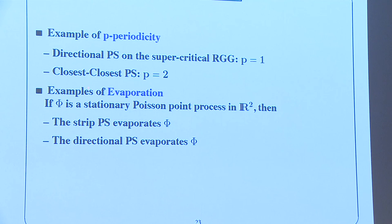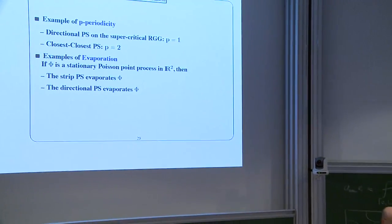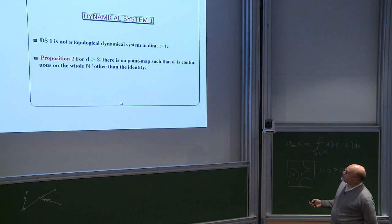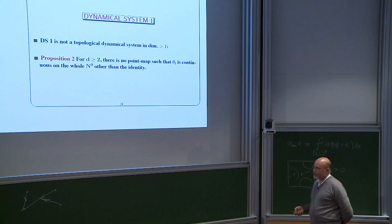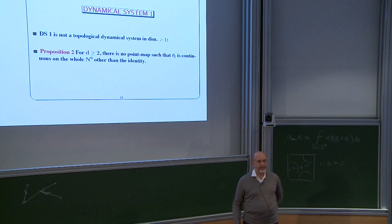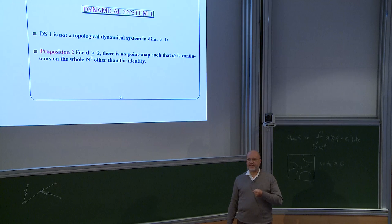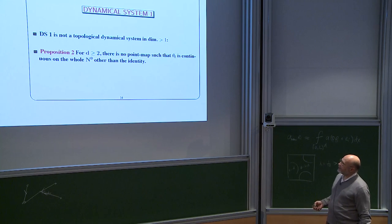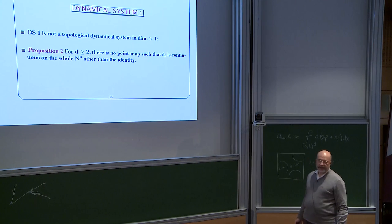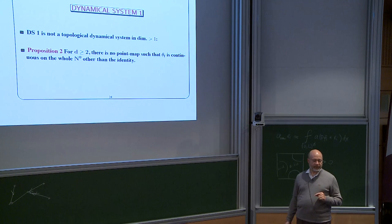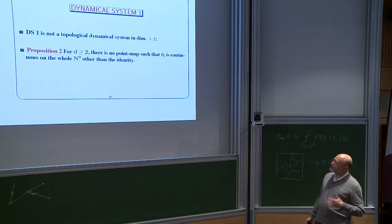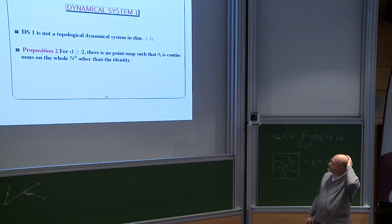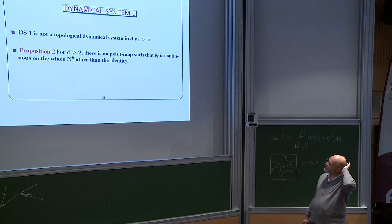Examples of periodicity: closest-closest is 2-periodic, directional is 1-periodic (traps). Strip and directional evaporate for a Poisson point process in R^2. The first dynamical system looks nice but theta_f is not continuous for dimension d ≥ 2 — there is no point map such that theta_f is continuous on all of N_0. Therefore one must concentrate on the dynamical system of laws and study its asymptotic dynamics.